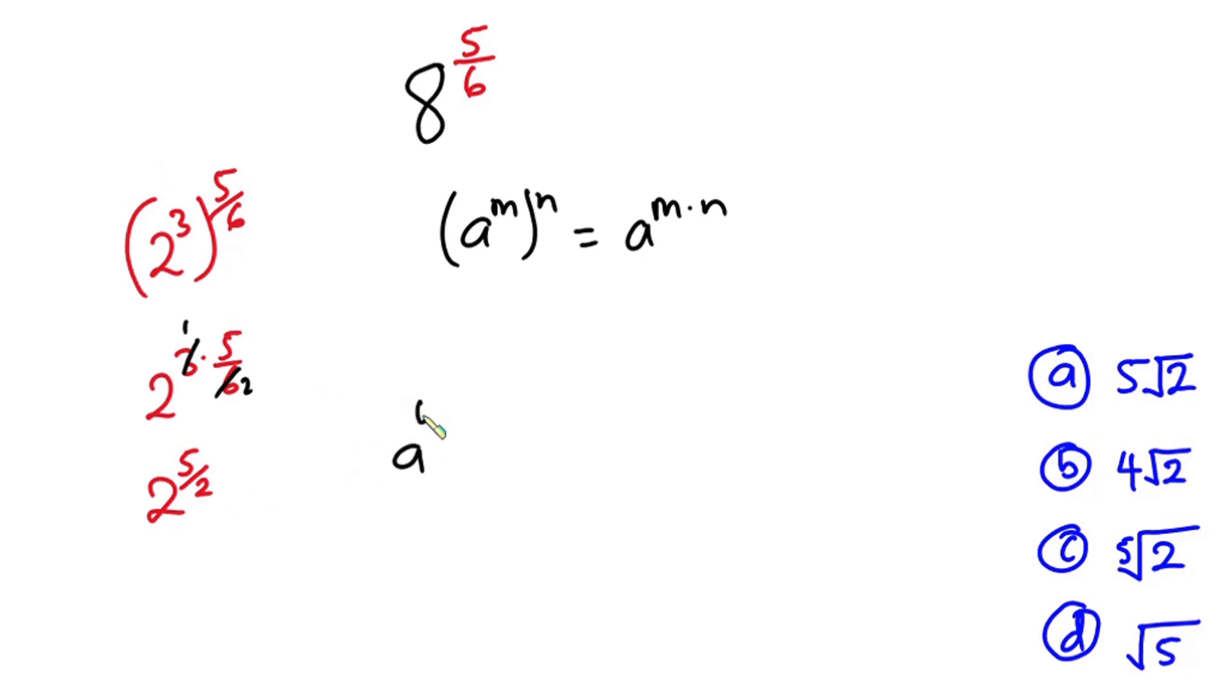Now if I have a to the power b over c, this could be written as the c root of a to the power b. And this is also equal to the c root of a to the power b. And one thing is that square root of a is the same as a to the power one half. So I can write this whole thing as square root of 2 to the power 5.